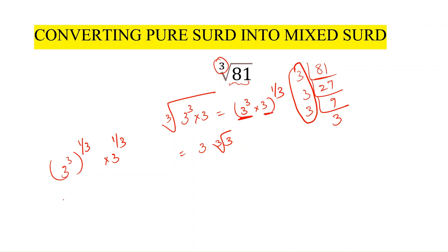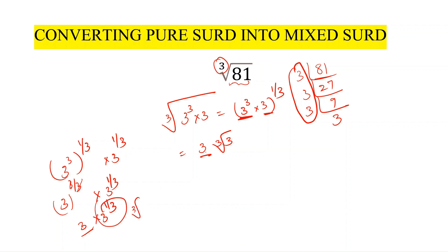This becomes 3 cubed whole to the power 1 by 3, times 3 to the power 1 by 3. The first part simplifies: 3 to the power 3 by 3 equals 3 to the power 1, which is just 3. The second part, 3 to the power 1 by 3, is the cube root of 3. So the cube root of 81 equals 3 times the cube root of 3, which is a mixed surd.